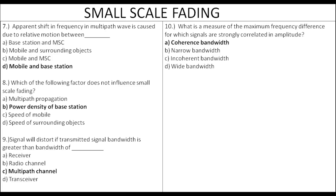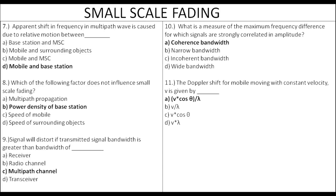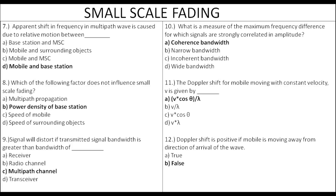Doppler shift formula: fd = v·cosθ / λ, where v is the velocity, θ is the angle between the direction of motion of the mobile and the direction of arrival of the wave. Therefore coherence bandwidth in the field can be quantified by coherence signal. The Doppler shift is positive when moving toward the direction of arrival, not false — this is positive.